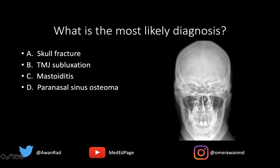These are the ethmoid air cells, the sphenoid sinuses, and then these are the frontal sinuses. The right one is normal, but if you take a look at the left frontal sinus, there's this ovoid dense lesion here, which represents a left frontal bone osteoma.